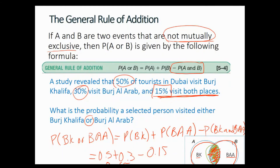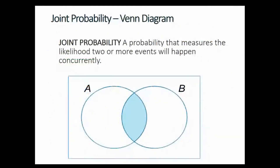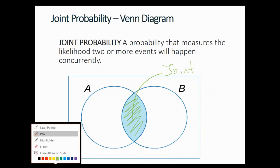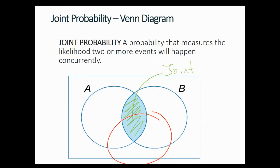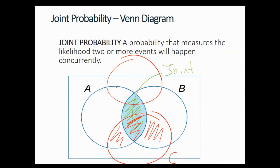The joint is the probability that people went to Burj Khalifa and Burj Al-Arab at the same time — represented by the middle overlapping area in the Venn diagram, where event A and B are happening simultaneously. In this diagram there are only two events, but there could be a third or fourth. With a third event C, you would have a joint between A and B, between A and C, and between B and C. Adding a fourth event D, you get additional joints between each pair and among all combinations.